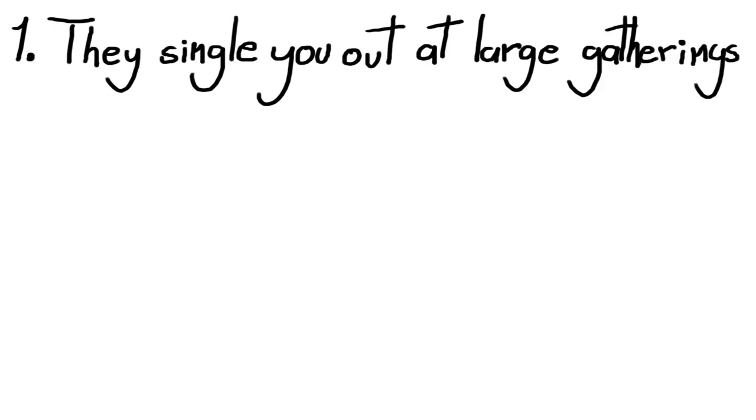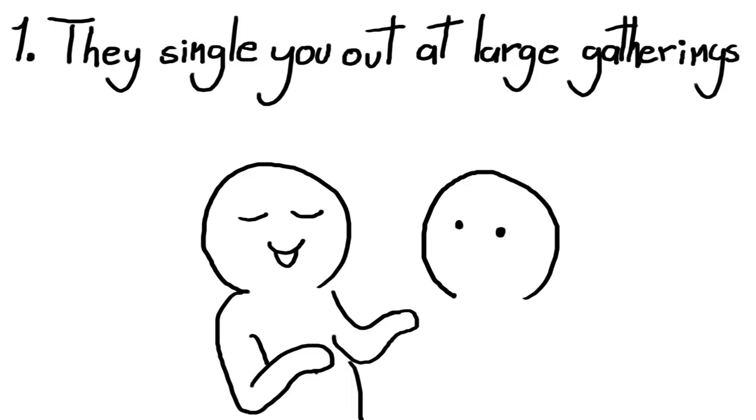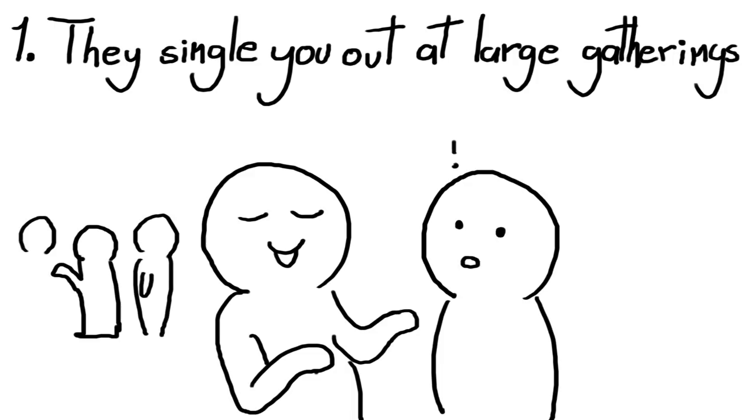One: They single you out at large gatherings. While ambiverts can find enjoyment from being around other people, they usually feel more at ease among smaller groups or having one-on-one conversations. If they've ever singled you out at a party, chances are they are interested in interacting with you in a setting where they were most comfortable.